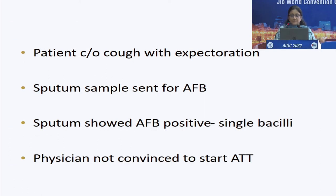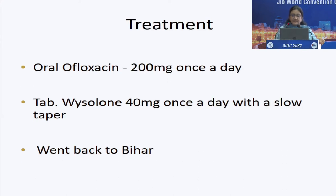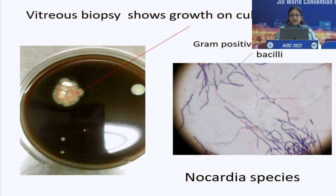Since this patient from Bihar was not ready to stay, we started him on broad spectrum antibiotic — ofloxacin — and steroids. The patient said he had cough with expectoration. The sputum sample showed only a single acid fast bacillus and the physician was not really convinced to start ATT for a single bacillus. But to our utter surprise, the culture report showed Nocardia species — we had been suspecting tuberculosis but it came out to be a Nocardia infection.